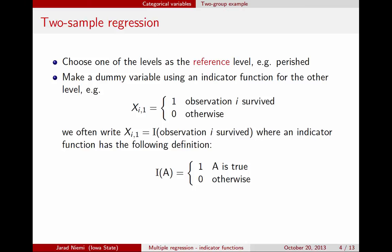Then we construct a dummy variable using an indicator function for the other level. In this case, the other level was survived. So here is the dummy variable. The first explanatory variable in our regression is either going to be a one or a zero. It's going to be a one if observation i is one of those that actually survived, and it's going to be zero otherwise. Since in this example we only have two possibilities — survived or perished — all of those observations that are not a one are those that survived, and all the zeros are the set that perished.